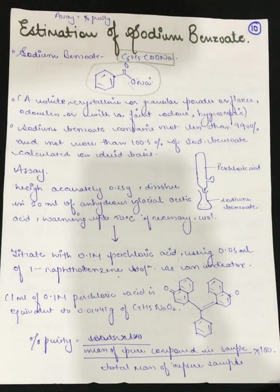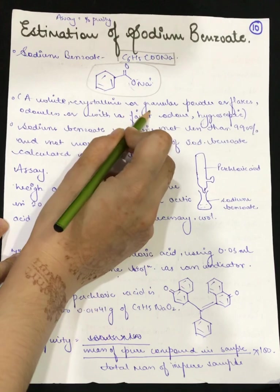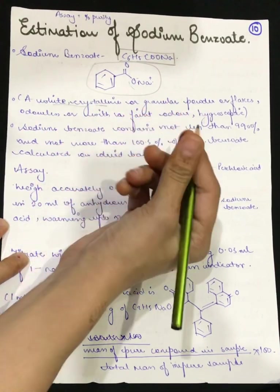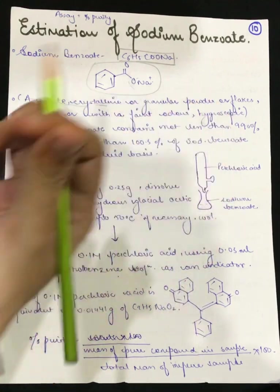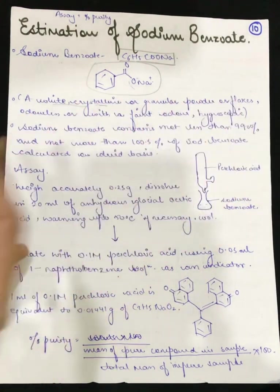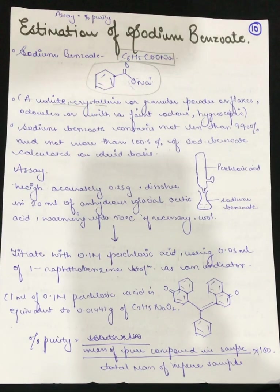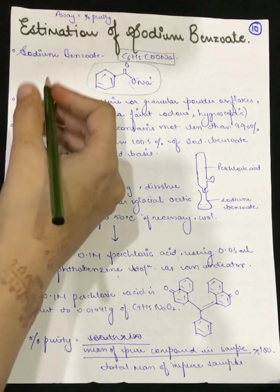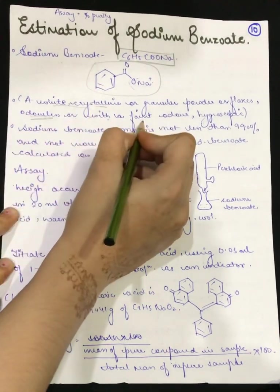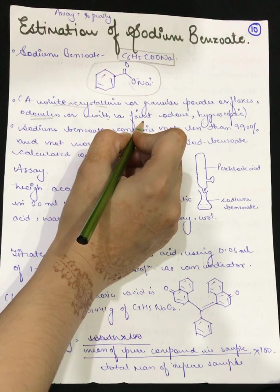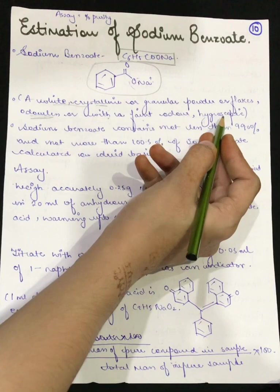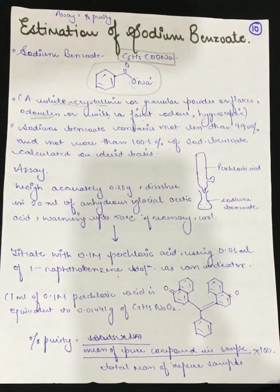Looking at its physical properties, it is a white crystalline or granular powder. It will be odorless or have a faint odor which we can easily identify. They are hygroscopic, meaning they will attract moisture. Hygroscopic substances attract moisture.